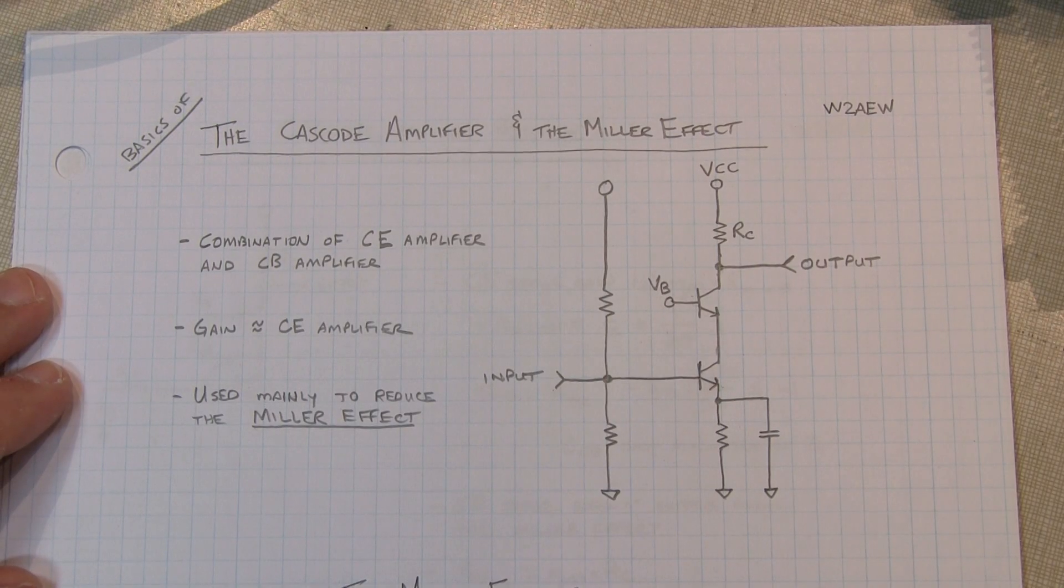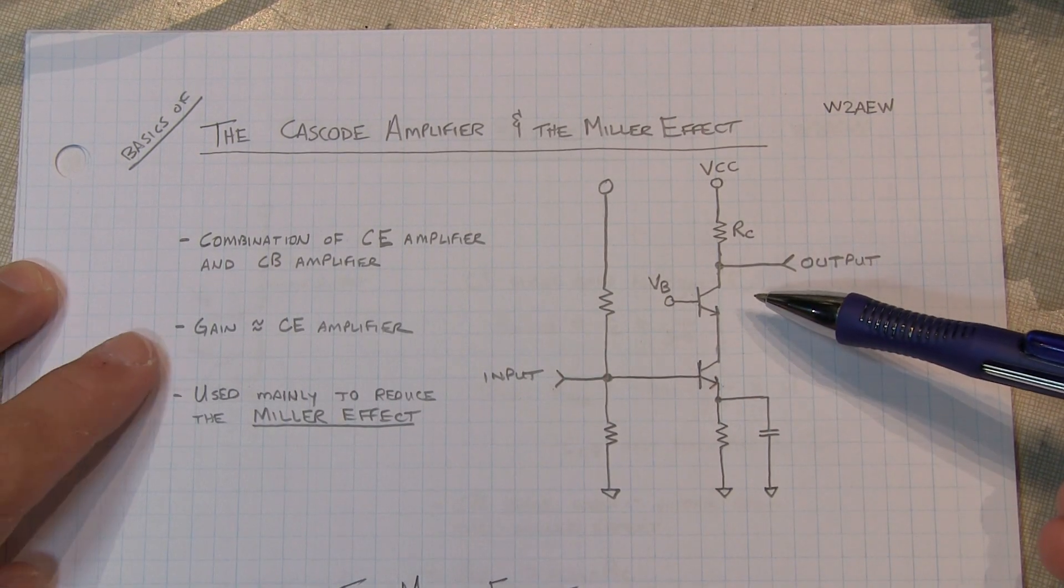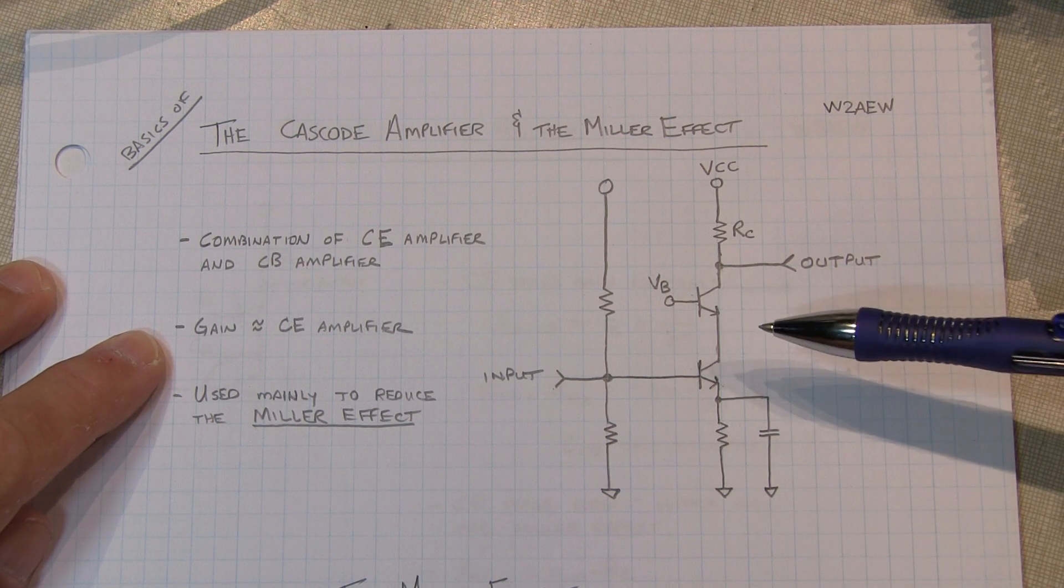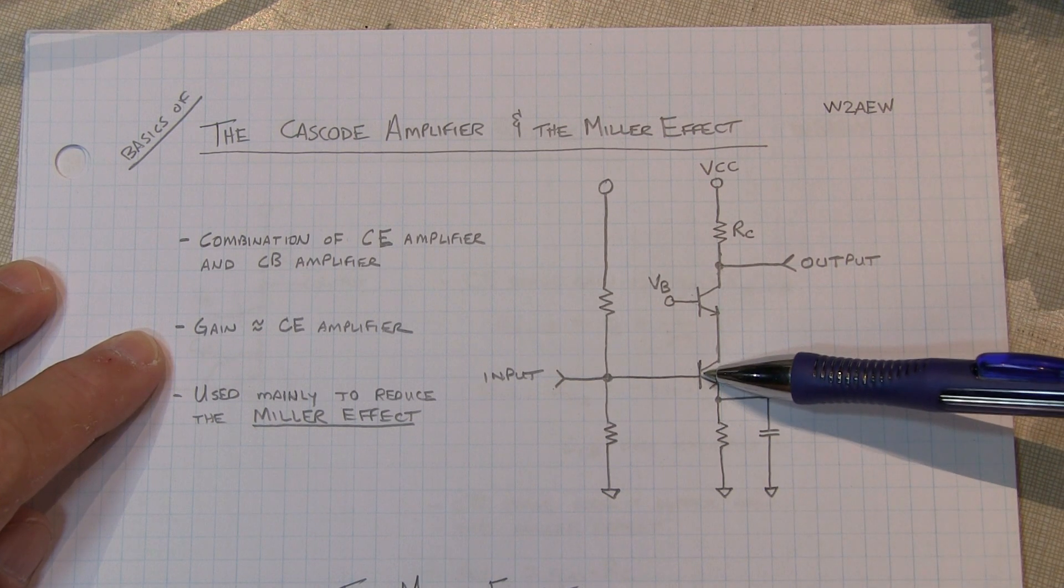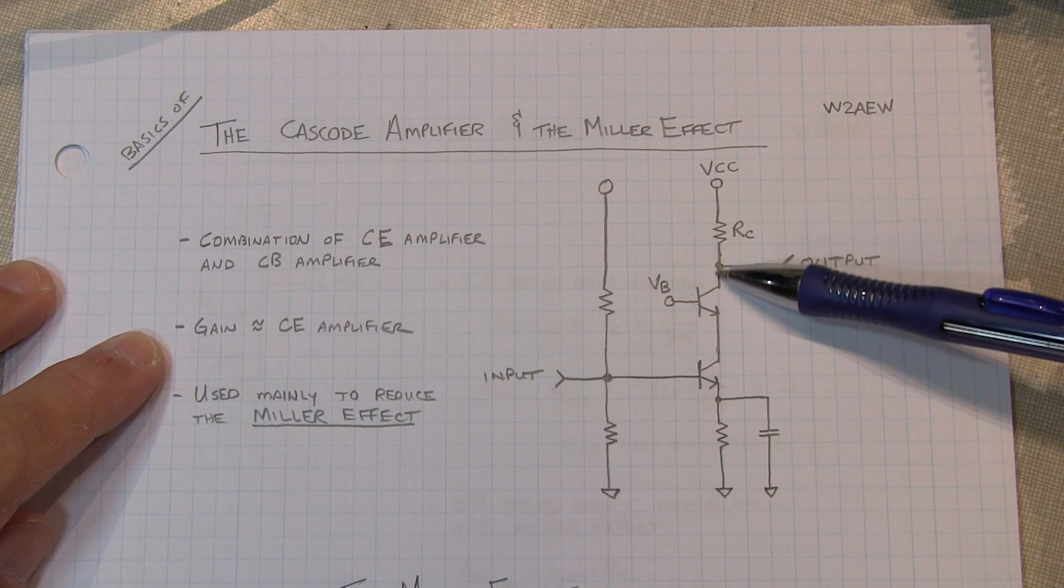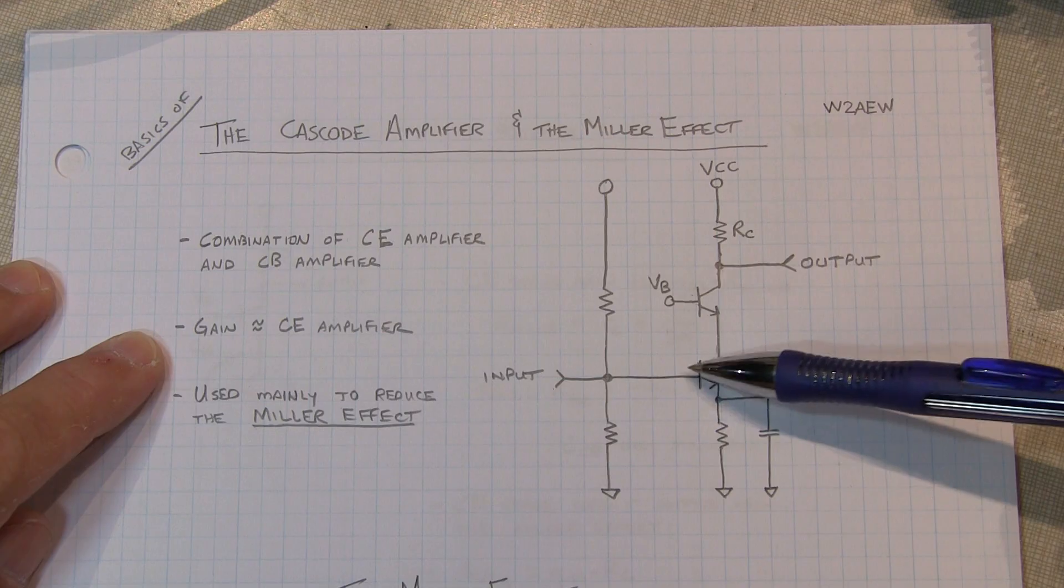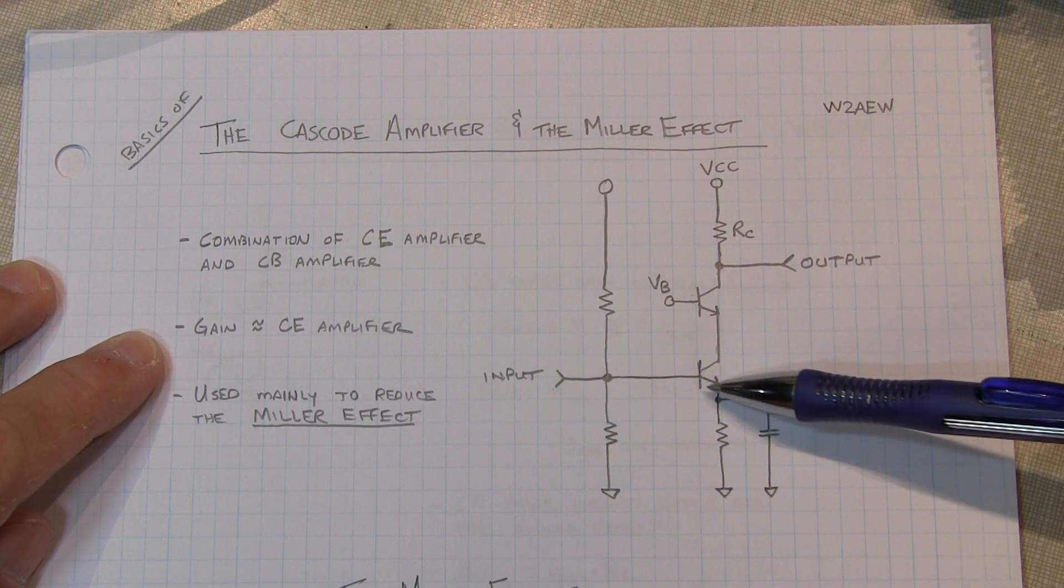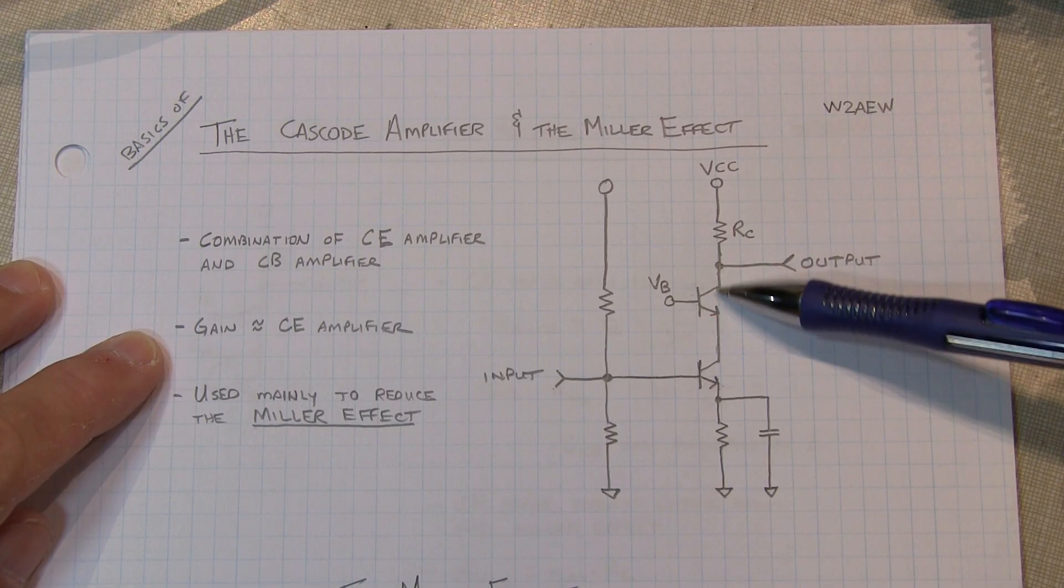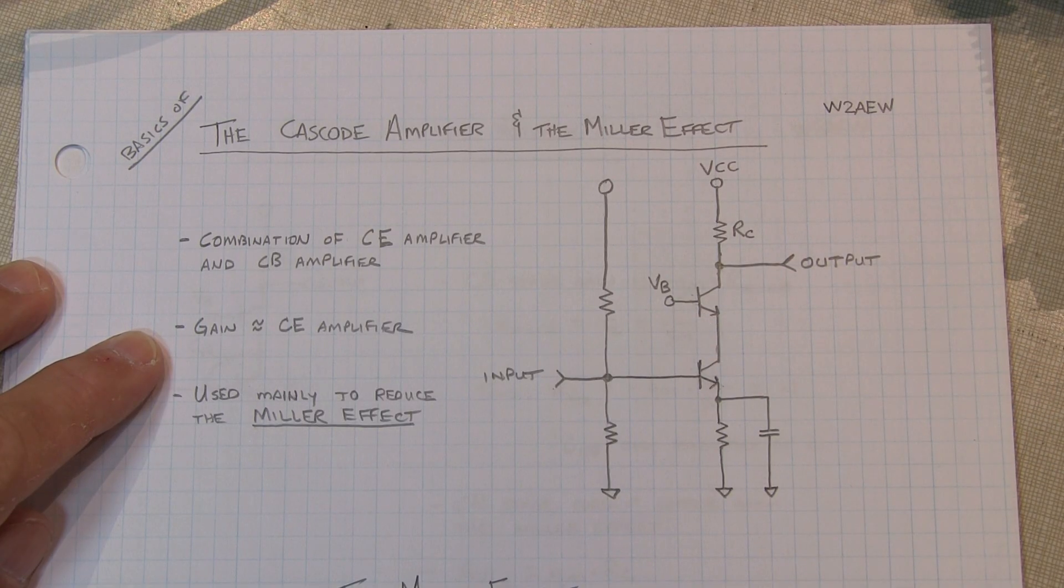The overall gain of the Cascode amplifier is basically the same as just the common emitter amplifier. And it's easy to see why. If we think about the collector current in this common emitter amplifier, it's virtually equal to the collector current of the common base. So any changes due to the input in this collector current are going to be reflected up here. So in a sense, the addition of the common base transistor doesn't dramatically affect the gain.